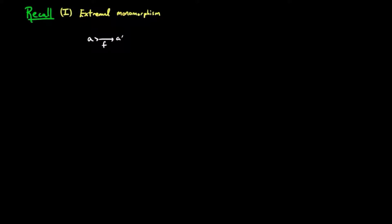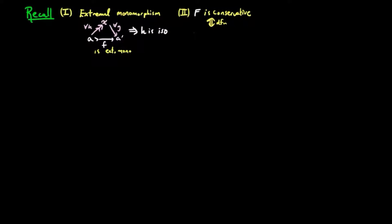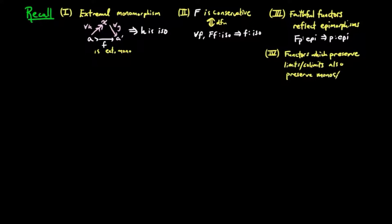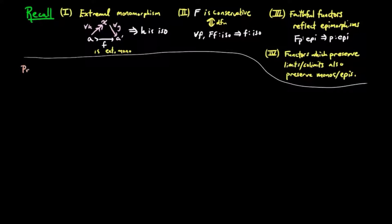For the next result, we need to recall the following definitions and results. (1) F is an extremal monomorphism if and only if F is mono, and for each factorization of F with H an epimorphism, then H is an isomorphism. (2) A functor F is conservative if and only if for each B-morphism f, F∘f being an isomorphism implies f is an isomorphism. (3) Faithful functors reflect epimorphisms: if F∘P is an epimorphism and F is faithful, then P is an epimorphism. (4) Functors which preserve limits, respectively co-limits, preserve monomorphisms, respectively epimorphisms.